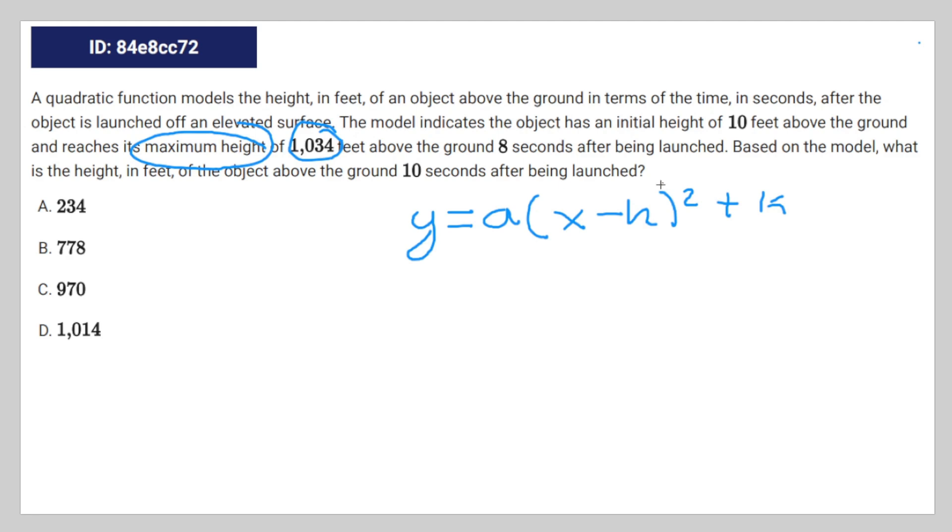And then we substitute these values for h and k. So that's going to be y equals a times (x minus 8) to the power of 2 plus 1,034.